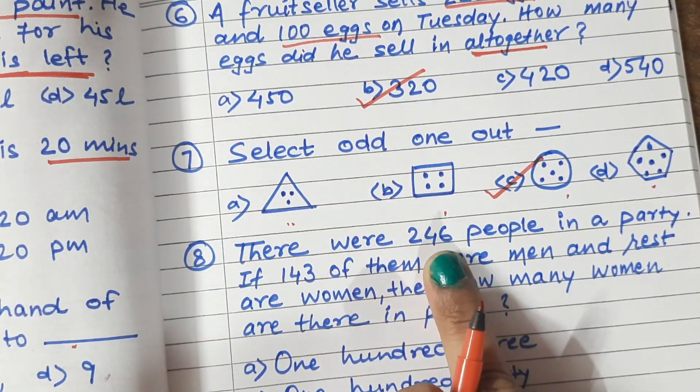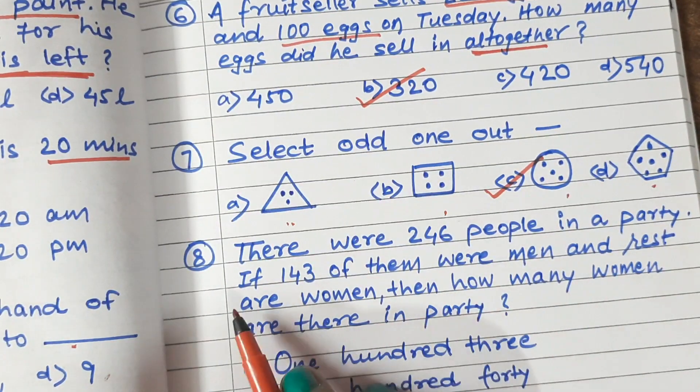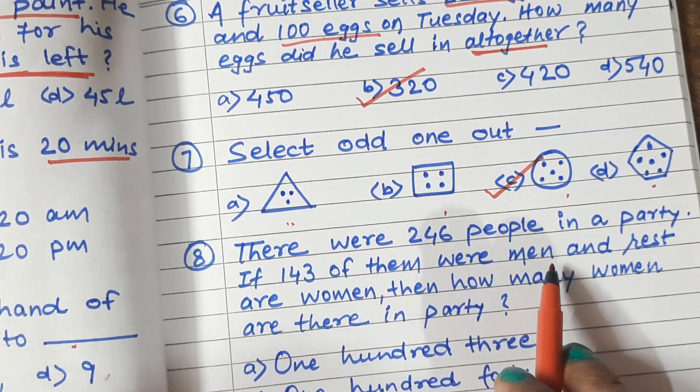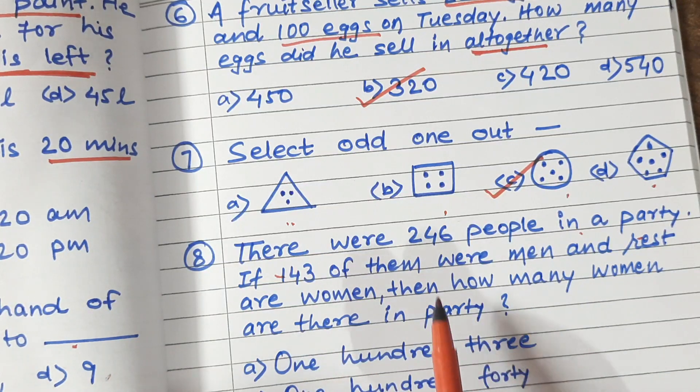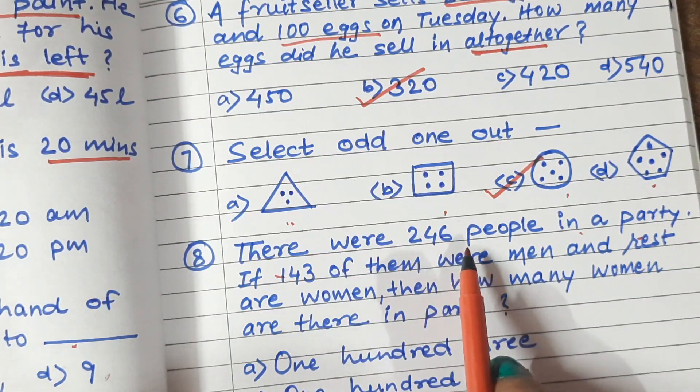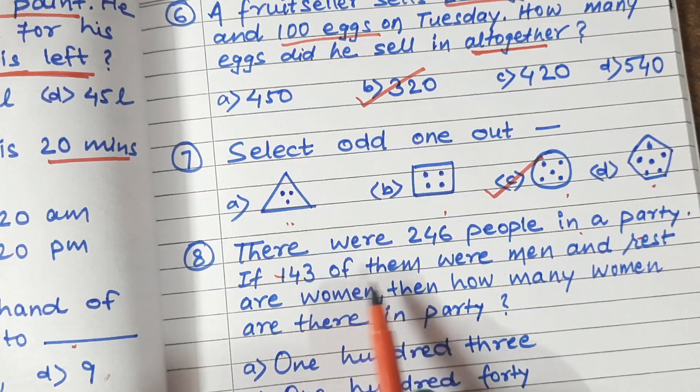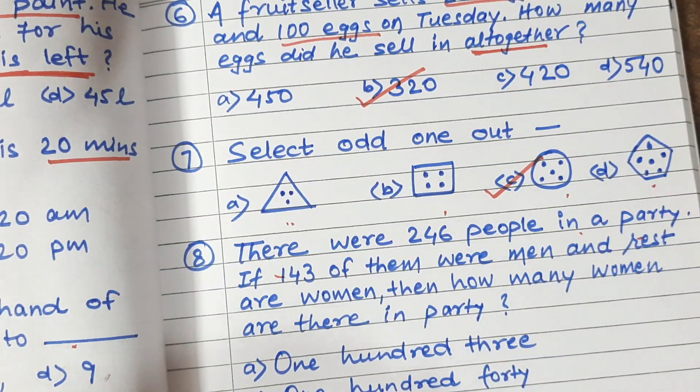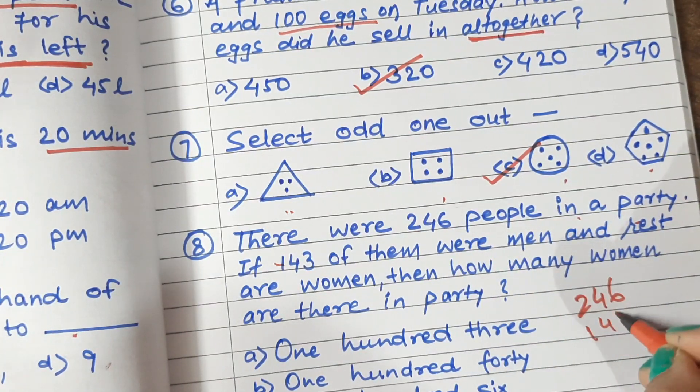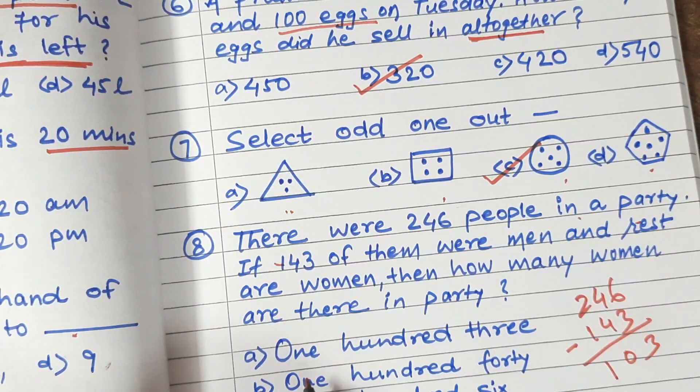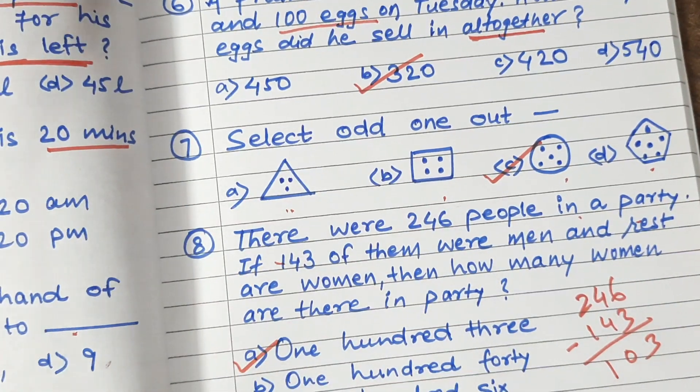Question 8: There were 246 people in a party. If 143 of them were men, then rest are the women. Then how many women are there in party? If there are 246 people in a party, there are 143 men and the rest are women. Then the number is asked for the women. So simply, we will minus 146 in 143. And this will be 103. That will be right.